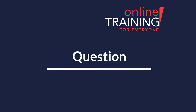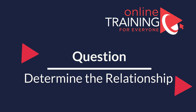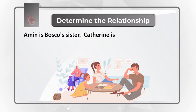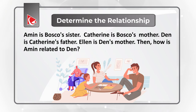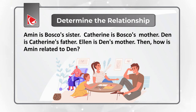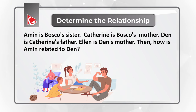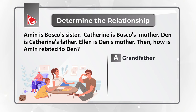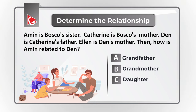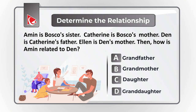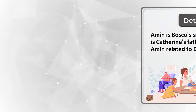Here's an interesting challenge where you need to determine the relationship between family members. Amin is Baska's sister. Catherine is Baska's mother. Dan is Catherine's father. And Alan is Dan's mother. You need to determine how Amin is related to Dan. You have 4 different choices: Choice A: grandfather, Choice B: grandmother, Choice C: daughter, Choice D: granddaughter. Give yourself a little bit of time to see if you can navigate this puzzle and get to the correct solution.